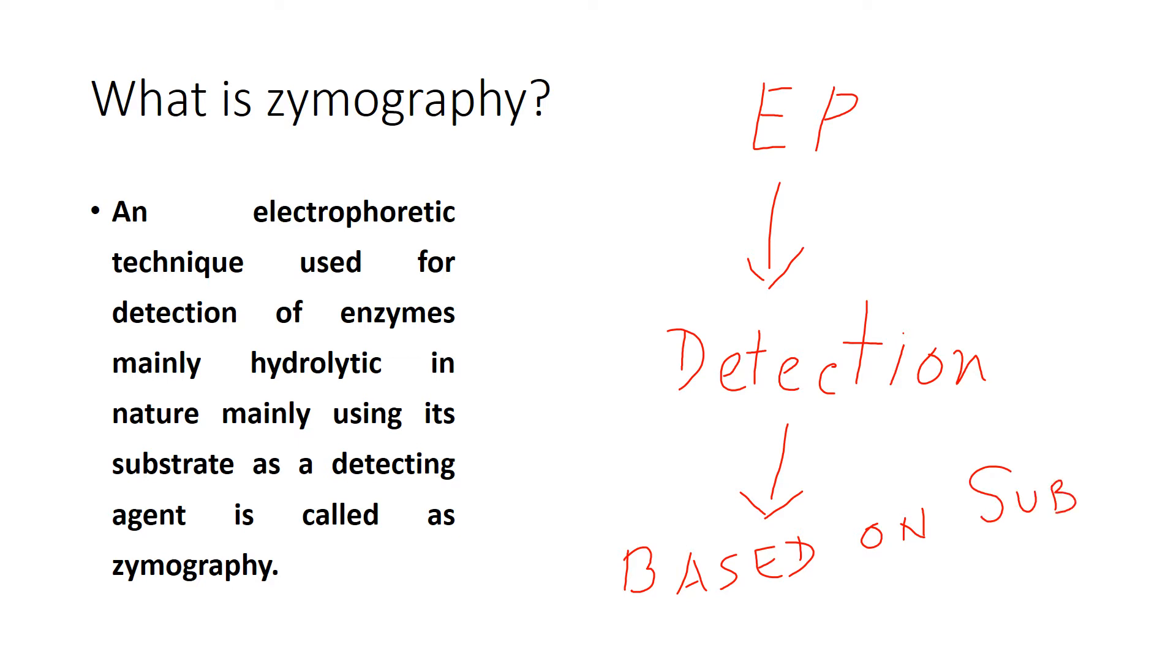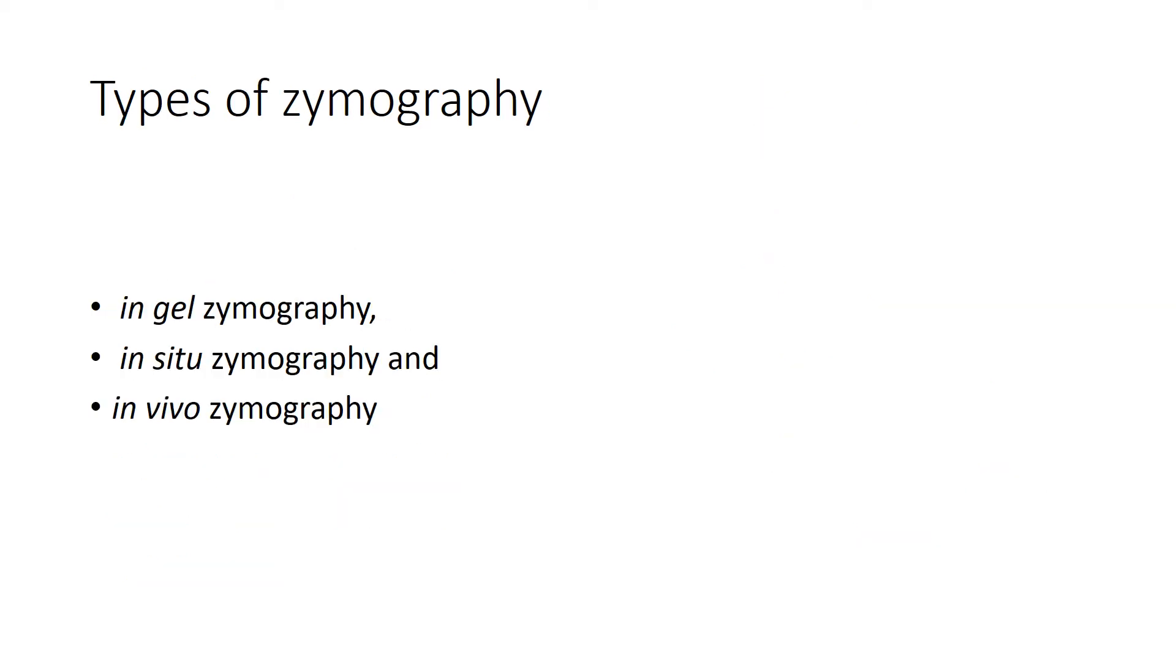This detection is based upon the substrate of the enzyme. This is the main thing which we are going to study in this lecture. It is an electrophoretic technique used for detection of enzymes. Now we come to types of zymography.